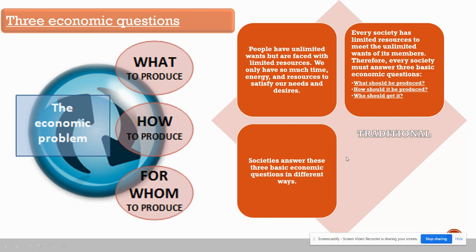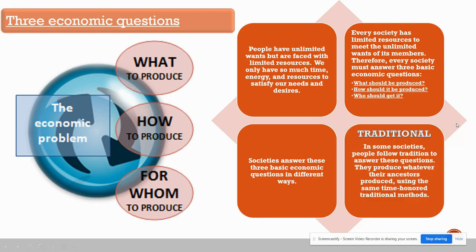Societies answer these three basic economic questions in different ways. The first and most basic is a traditional economy. In some societies, people follow tradition to answer these questions — they produce whatever their ancestors produced using time-honored traditional methods. This goes back to just producing what your great-grandparents and even earlier generations produced.